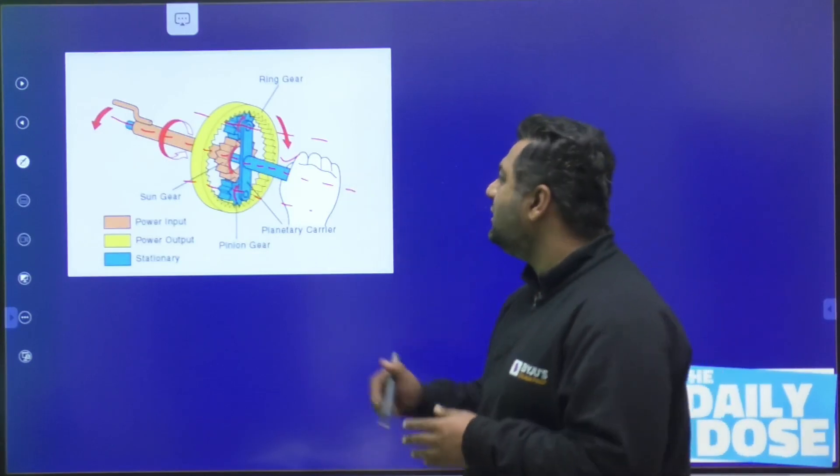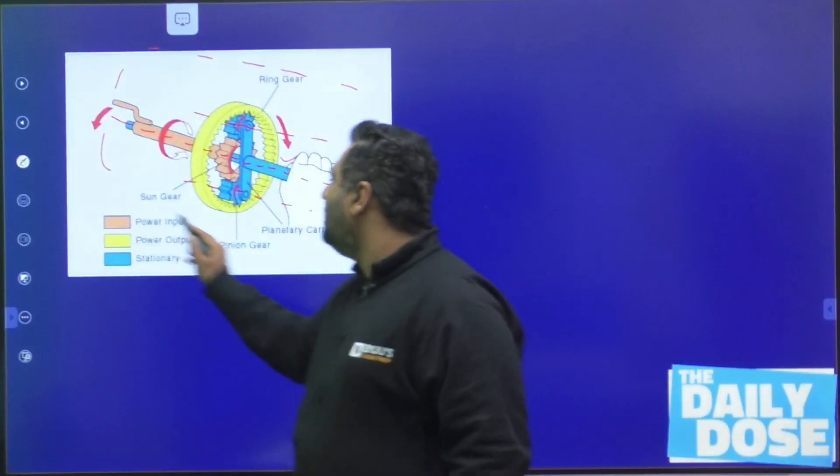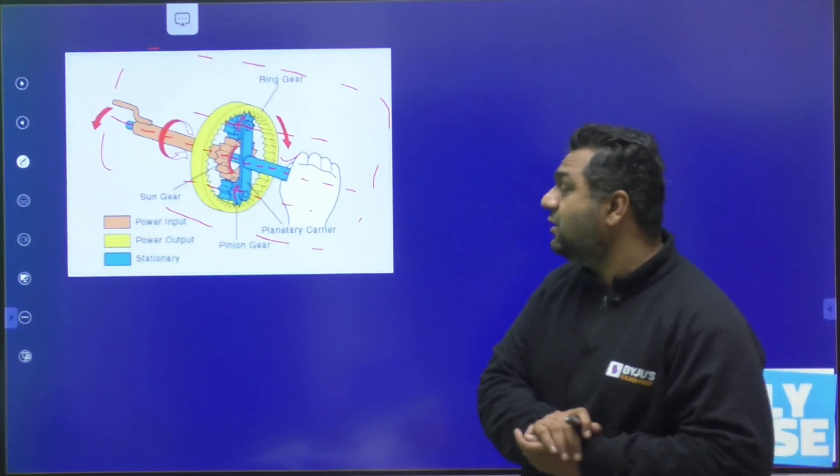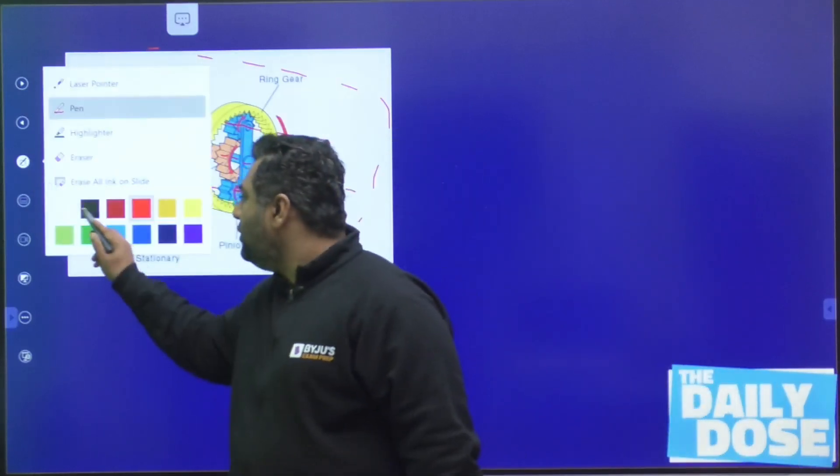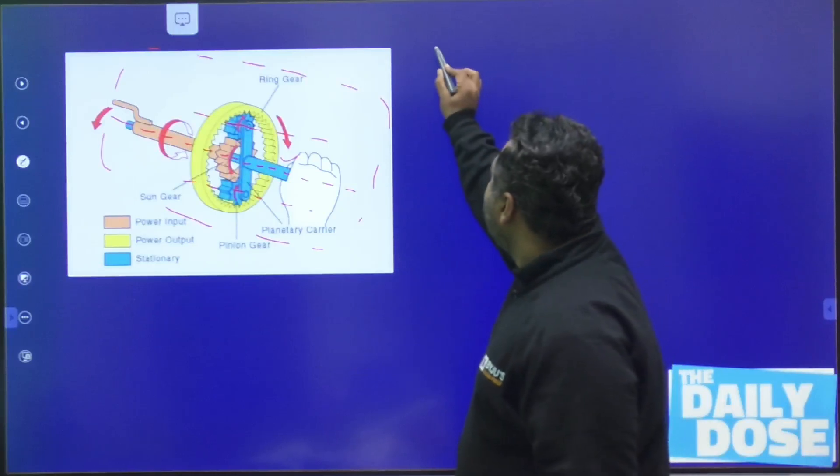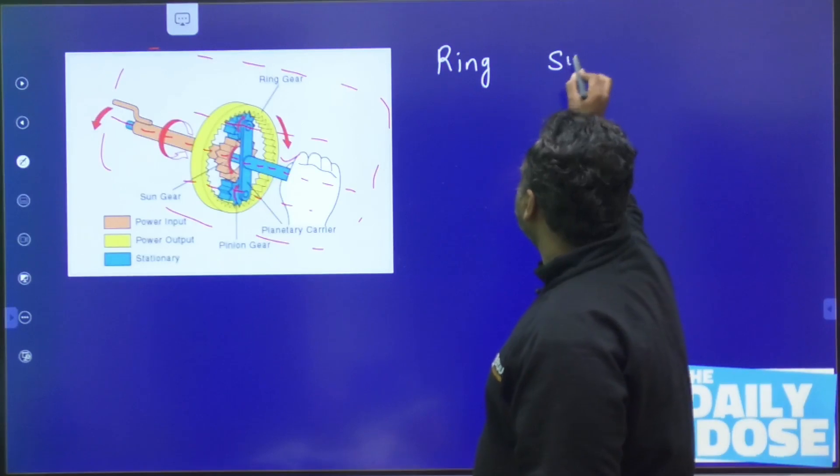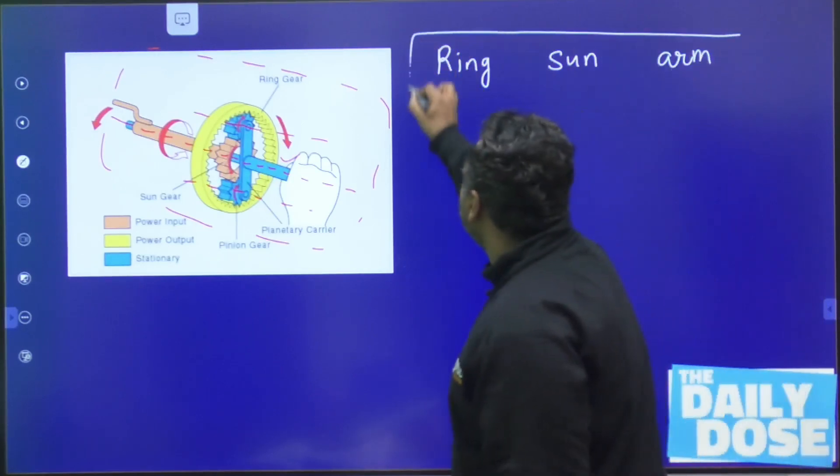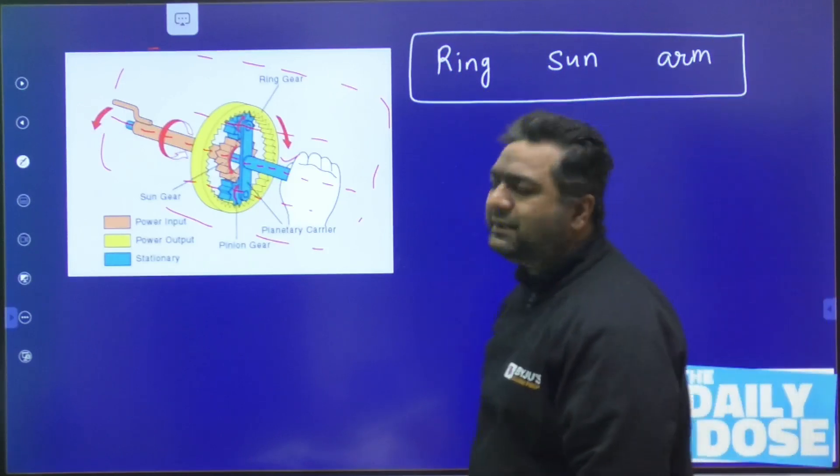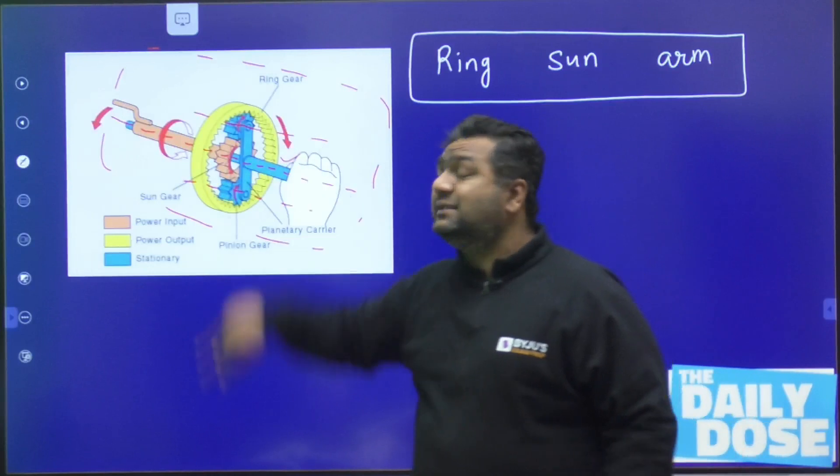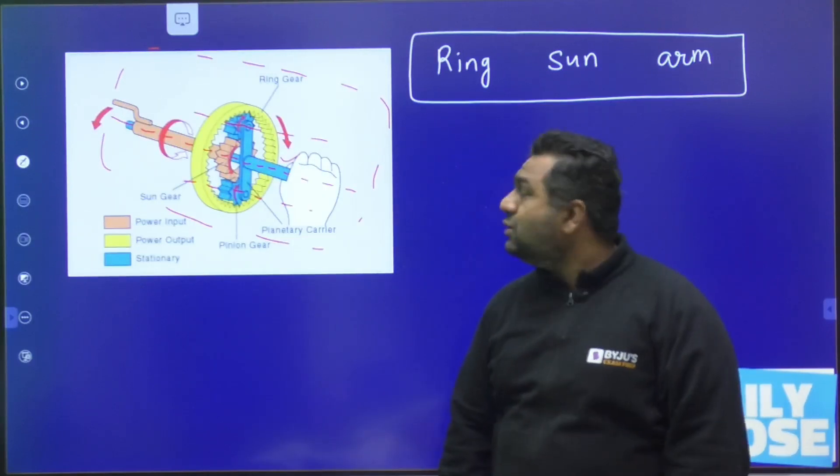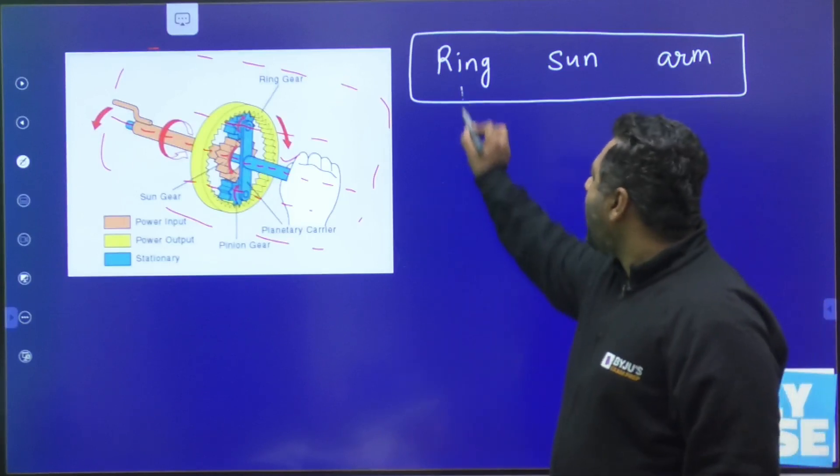So during all the calculation, we never consider the torque of the planet gears. If you see this entire system and if you are assuming that entire system to be isolated from outside, then you would be knowing that there is one gear that is going to be ring gear, second gear is sun gear, and third thing is arm.